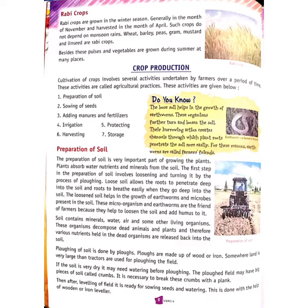Now we will talk about crop production. In this chapter we have crop production and management. The steps involved in crop production are: first, preparation of soil; second, selection of good quality seed; and third, adding manure and fertilizers.